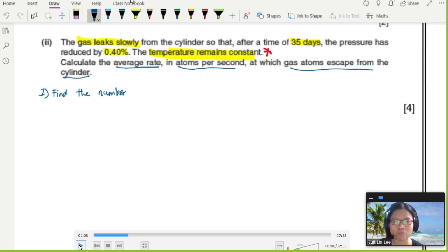Calculate the average rate in atoms per second at which the gas atoms escape from the cylinder. To find how many atoms are leaking out per second, I need to find the total number of atoms that leaked out in 35 days, then divide by the number of seconds in 35 days. So I'll find the number of atoms lost in 35 days.